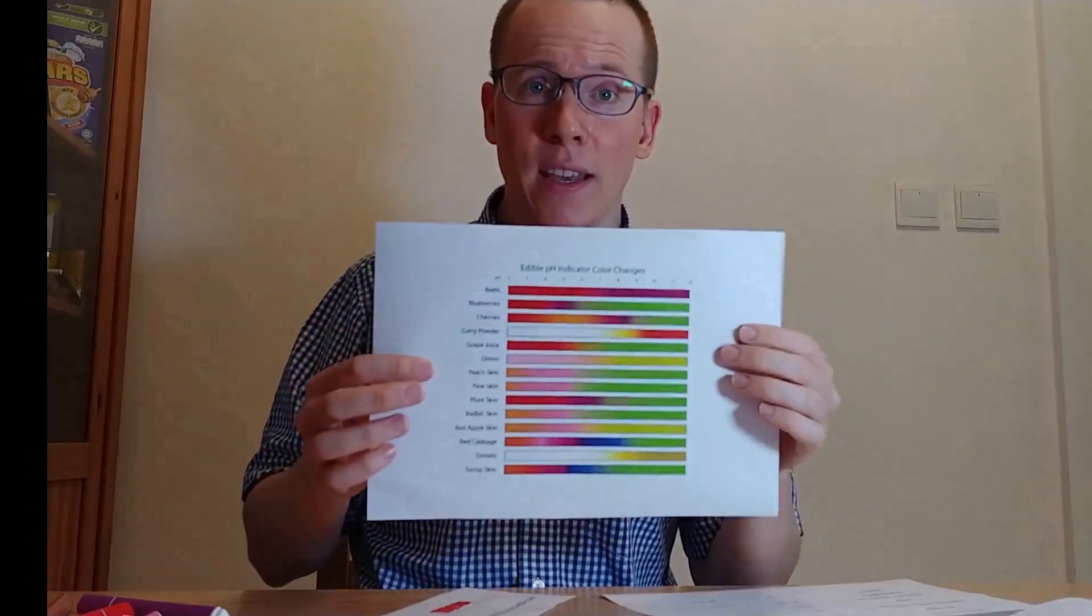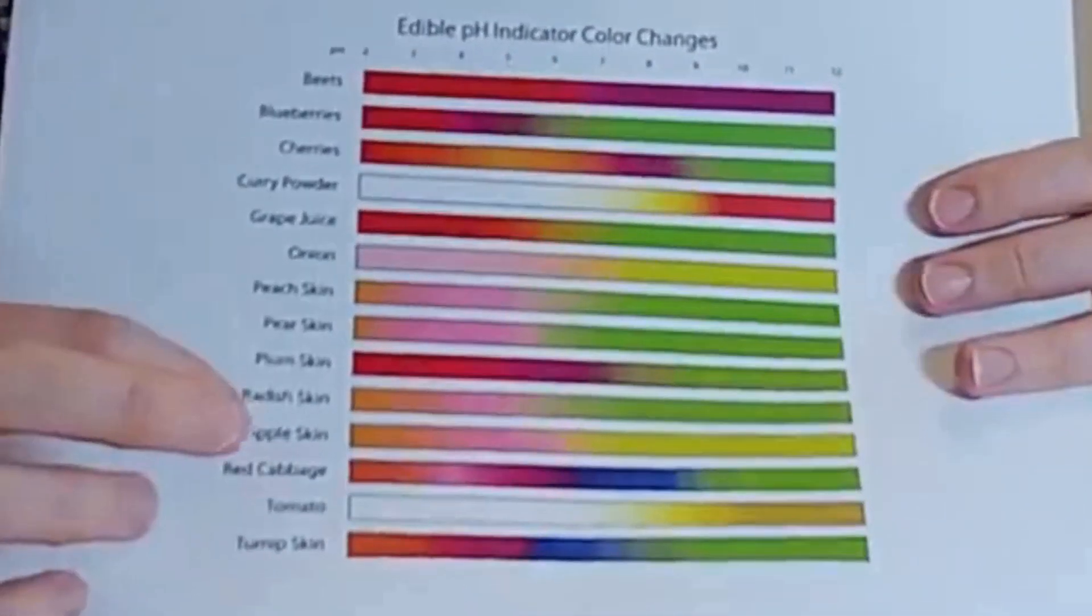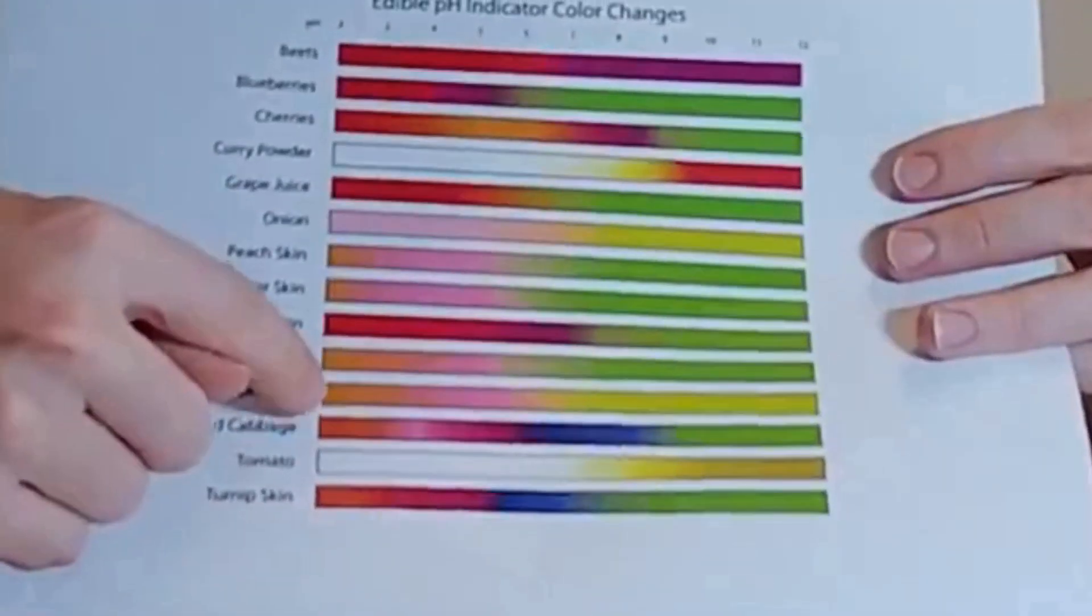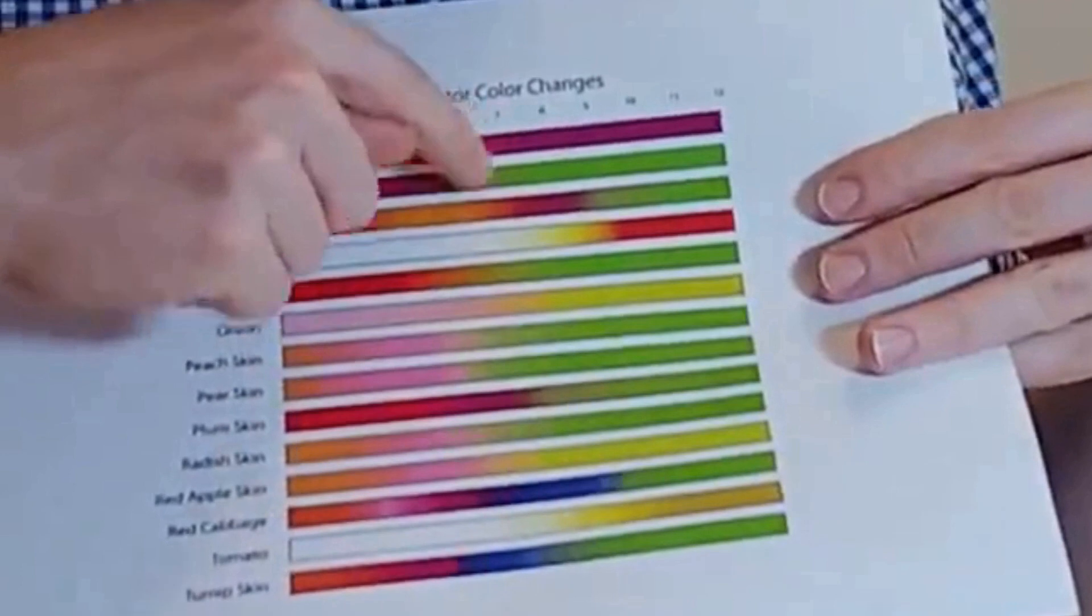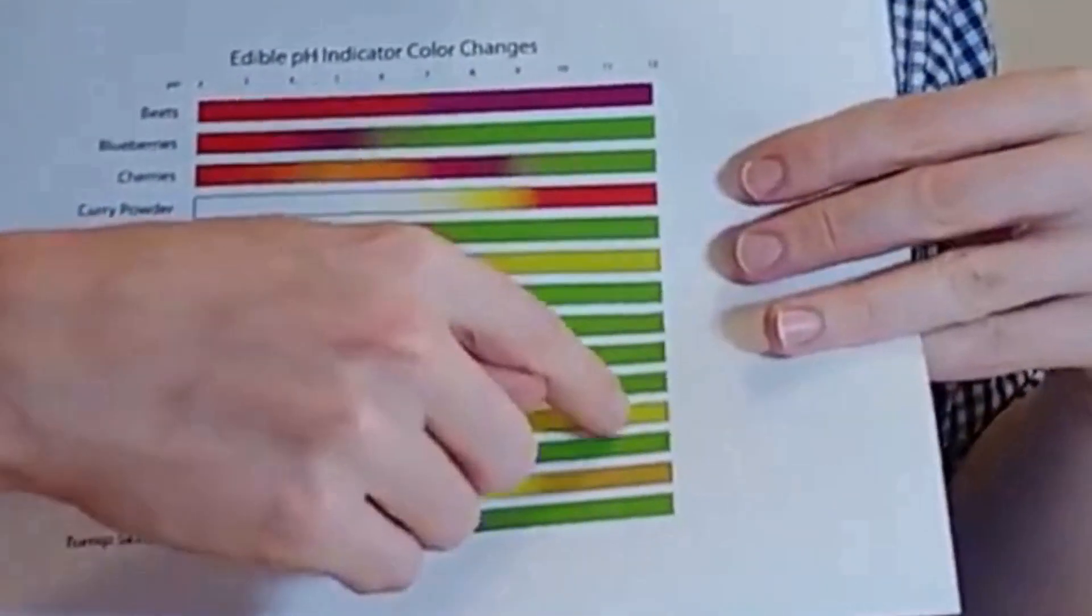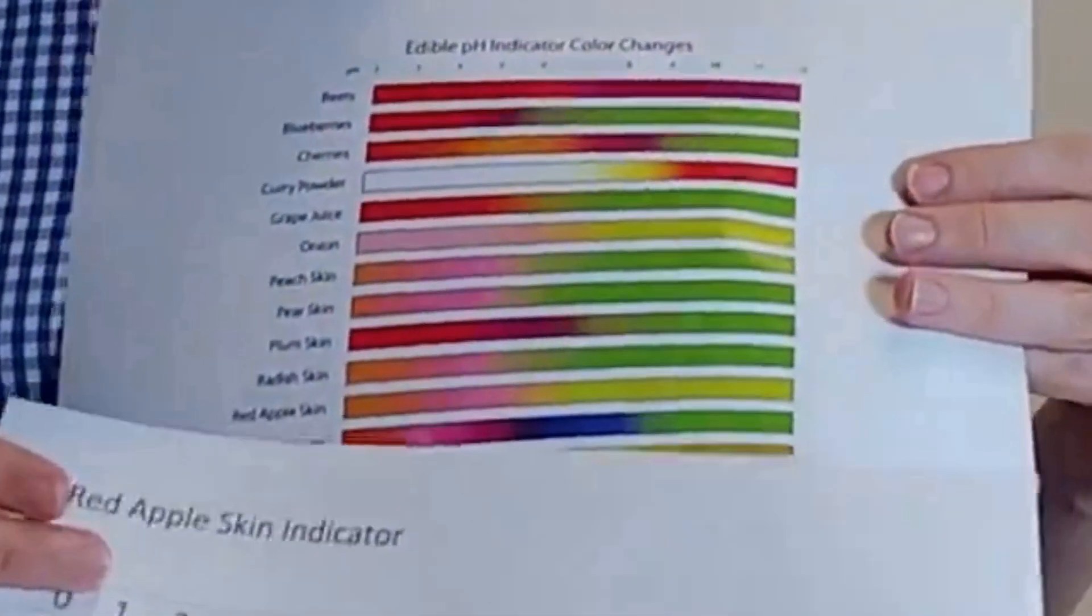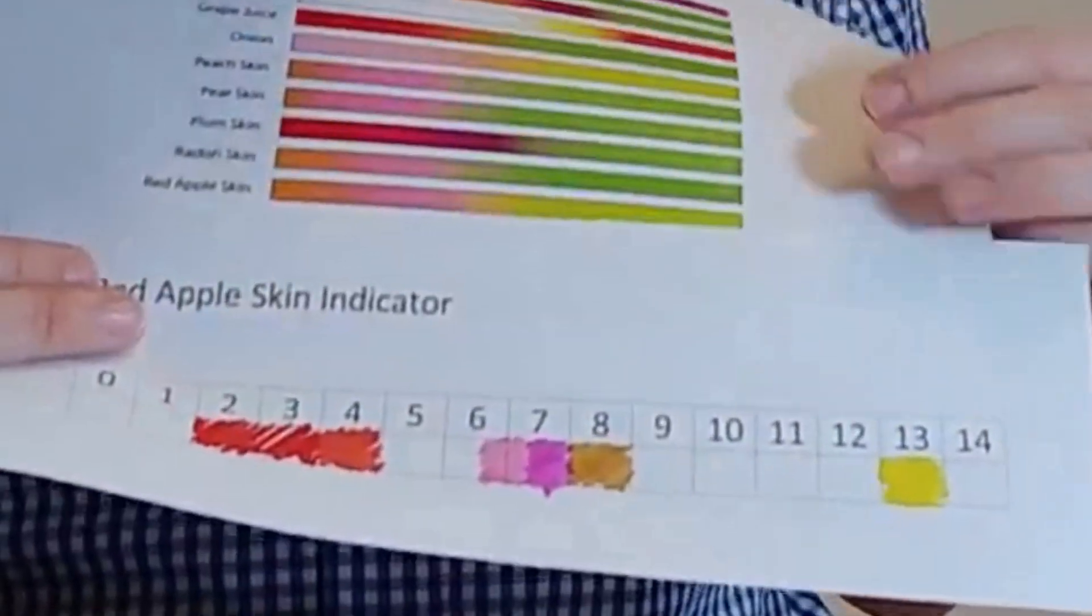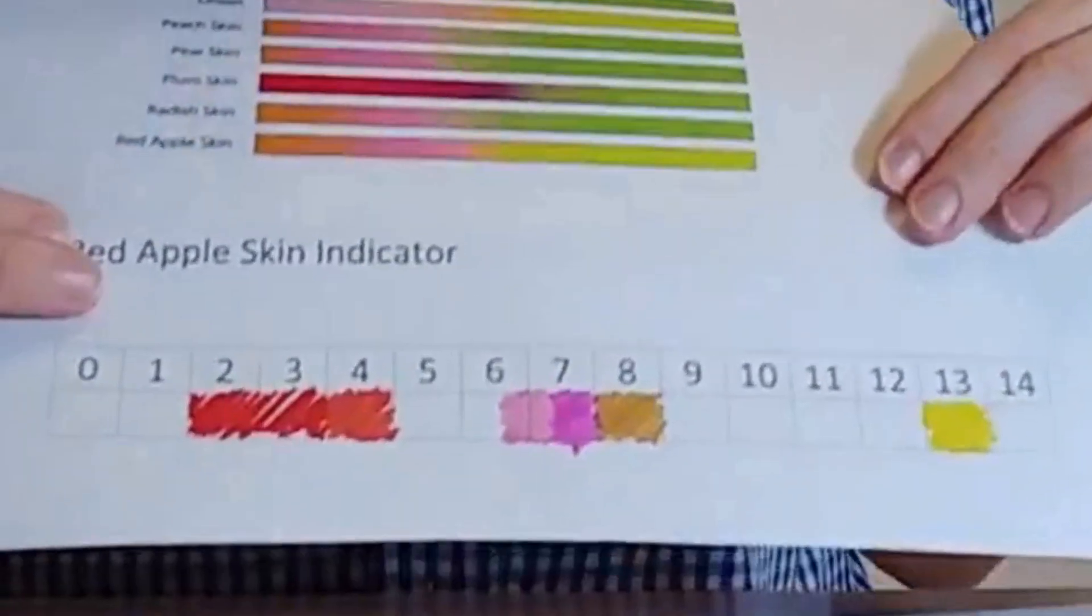Now I'm going to briefly look at a chart that I got off the internet. So here we can see some color charts for many natural indicators, one of them being red apple skin. And the red apple skin here starts orange, it gets pink and then around 7 it really starts to go yellow, and it maybe gets a little bit green towards the end. Is that the same as mine?